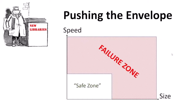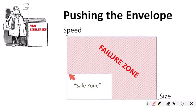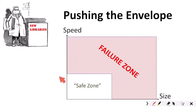What we have here is what I call the safety envelope. If you operate your app within this zone — below a particular speed and below a particular size of data that you transmit — then everything appears to work. But trust me, that is by accident, not by design. If you exceed a safe speed limit and/or a safe size limit, you are then in the failure zone.